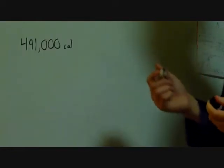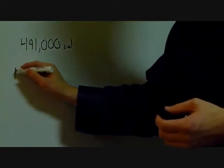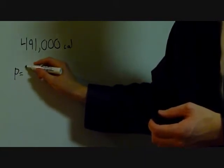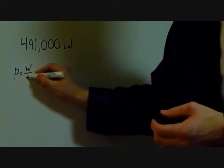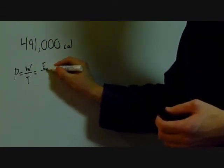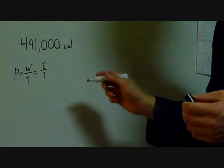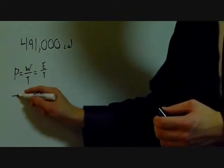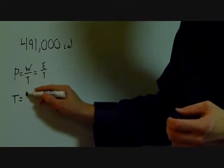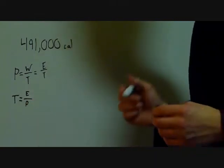To solve this problem, we need a relatively simple equation, which is power is equal to work over time, which is equal to energy over time. Using some simple algebra, we can rearrange this so the time it takes to burn off the calories is equal to energy over power.